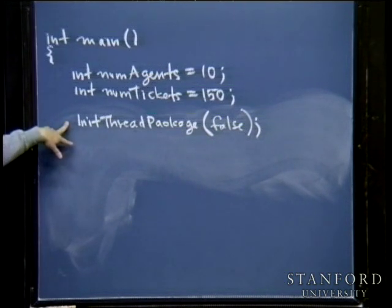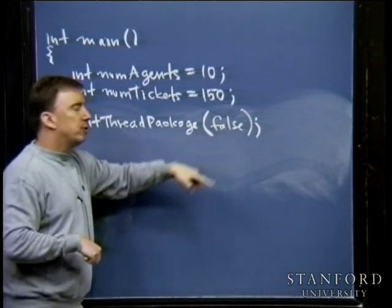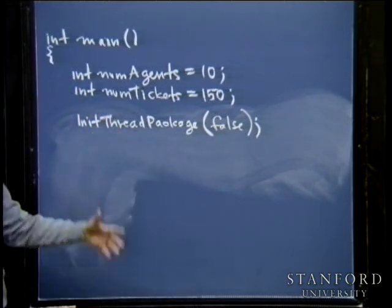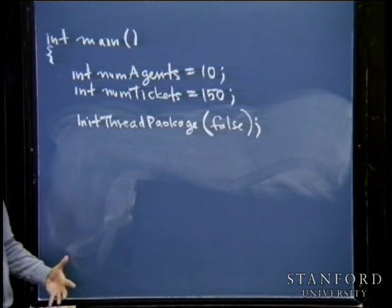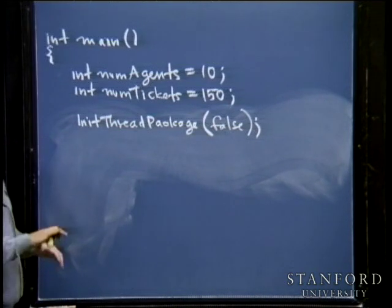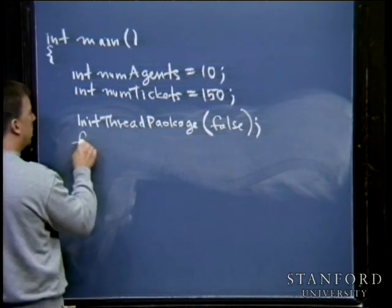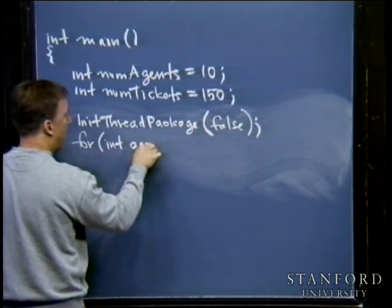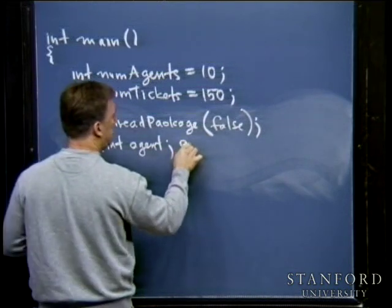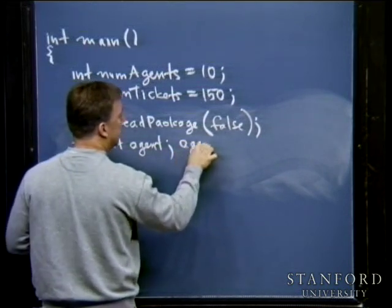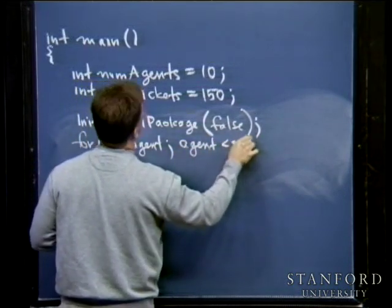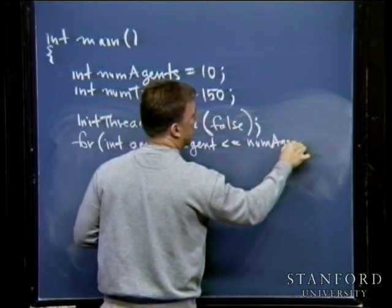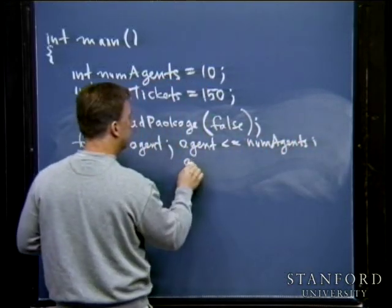This basically says I'm going to be using threads. Passing false means: please don't print debugging information. If you pass true, you get all types of information about how the threads are executing. Then I repeat the for loop: int agent, agent less than or equal to num_agents, agent plus plus.